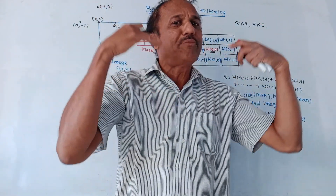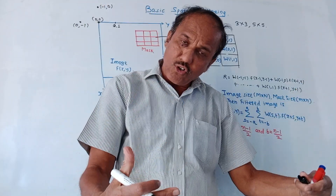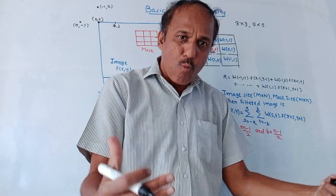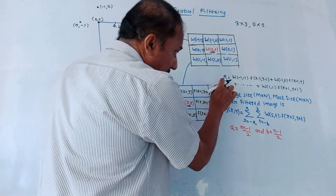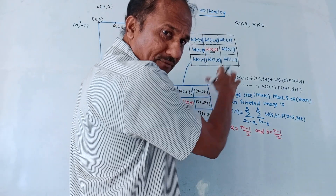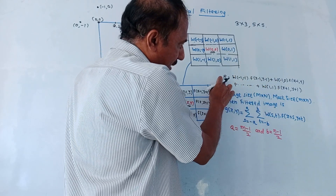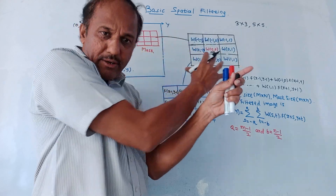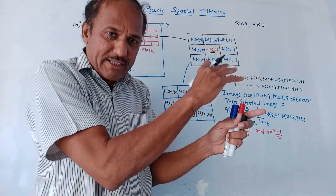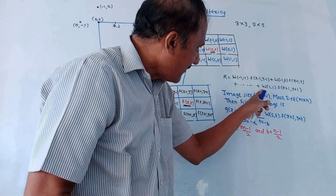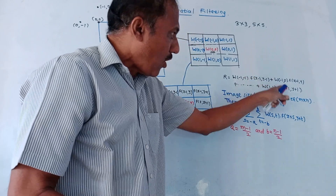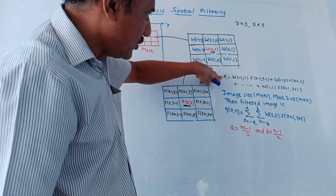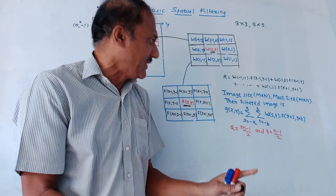Whatever output we get is called the response of this operation, or response of this filtering. This particular operation is called filtering in the spatial domain. This response or output after the calculation is denoted by R. We overlapped the mask on the image, took the multiplications, then added all the results of multiplication. Whatever output we get, denoted by R, is the response of the filter.